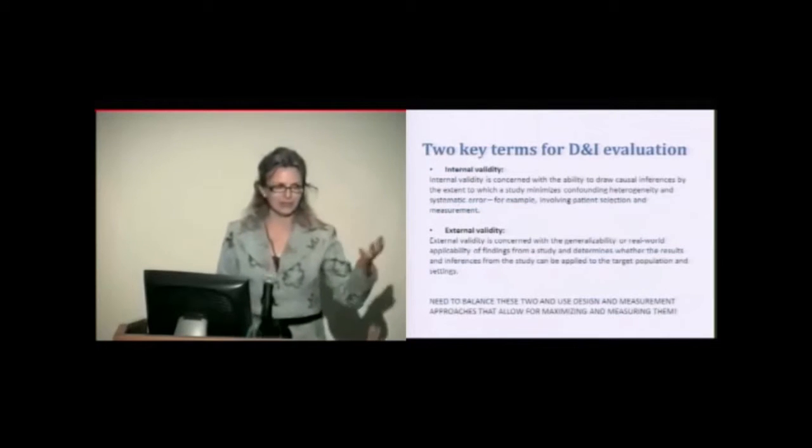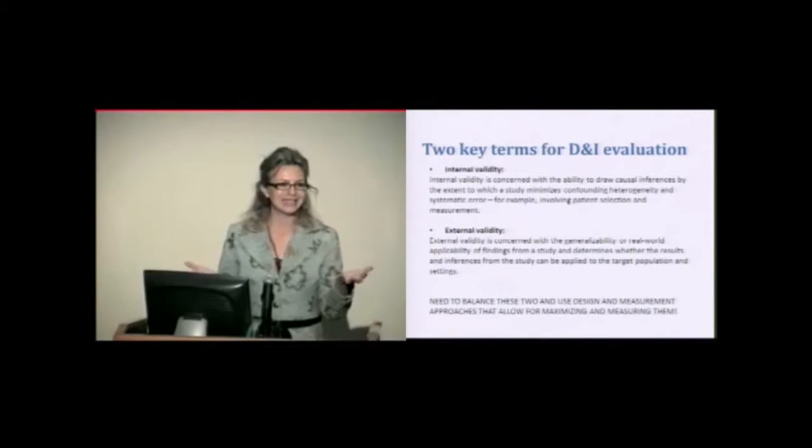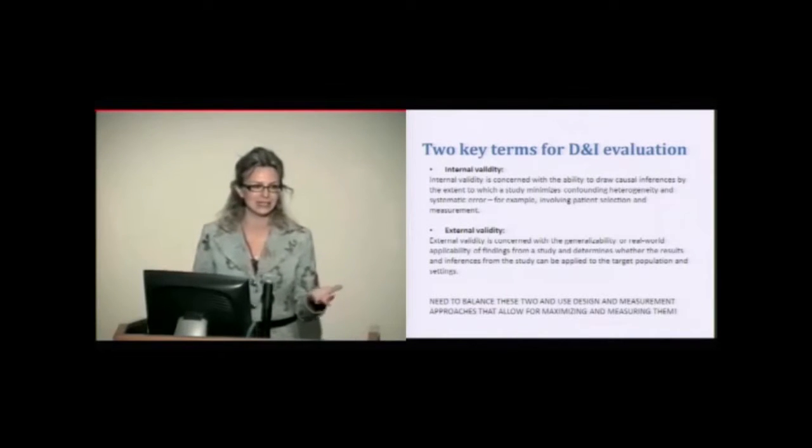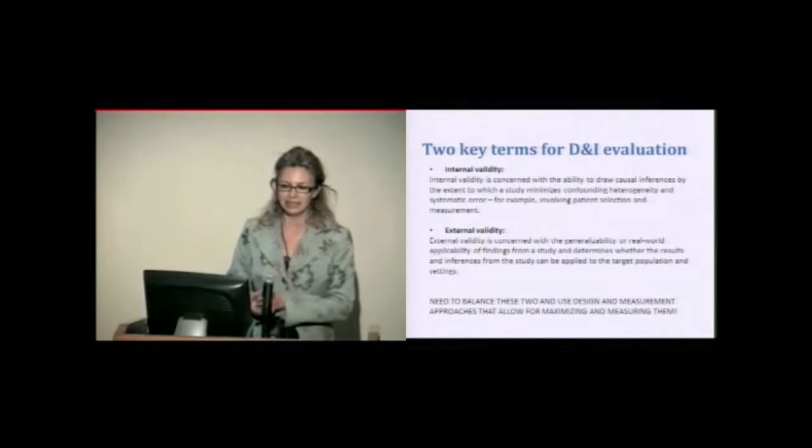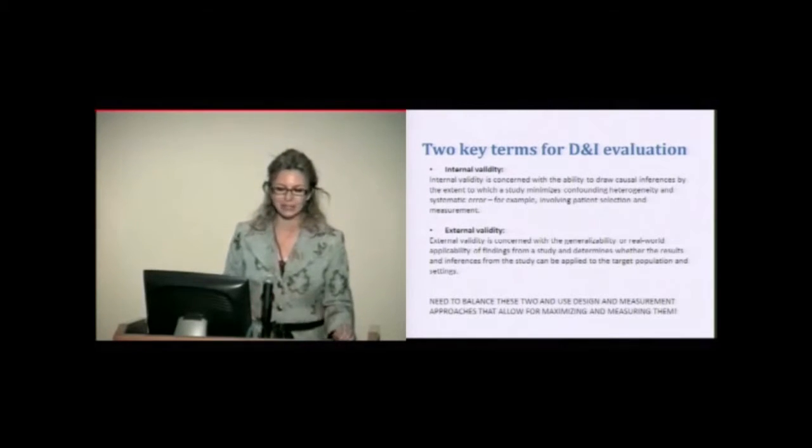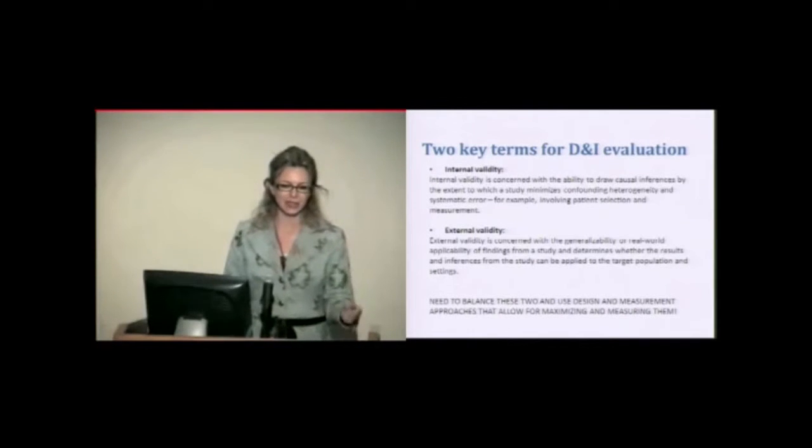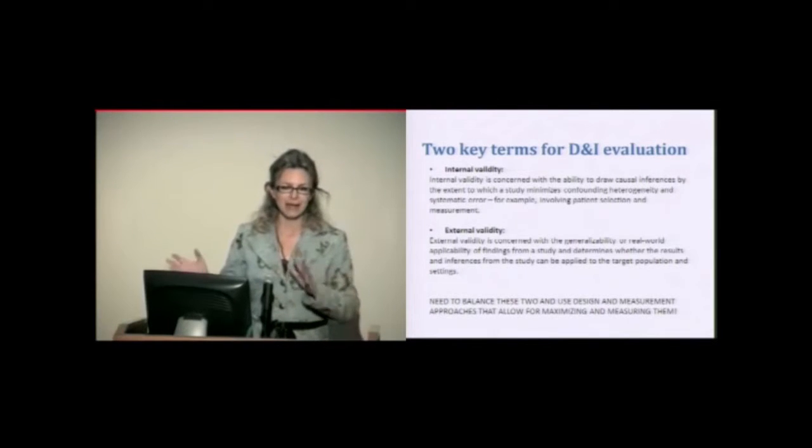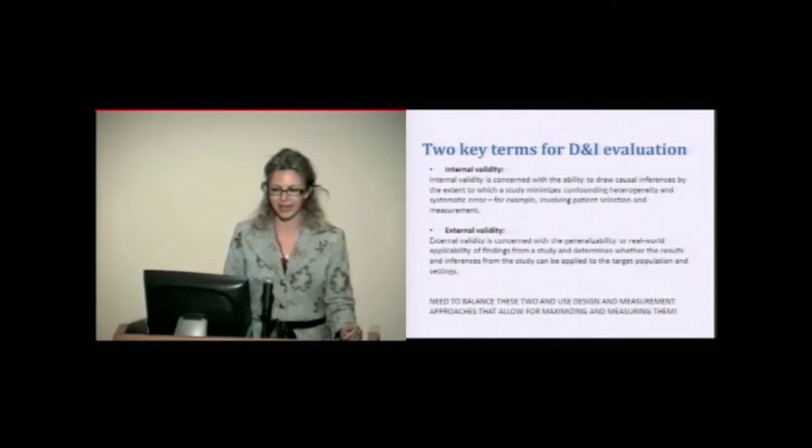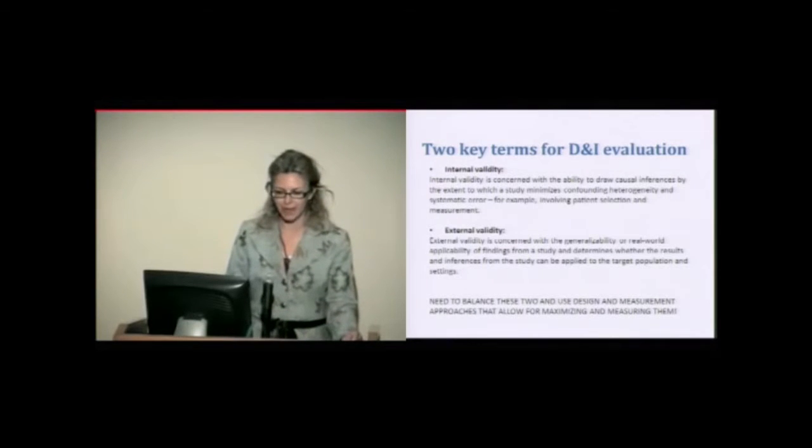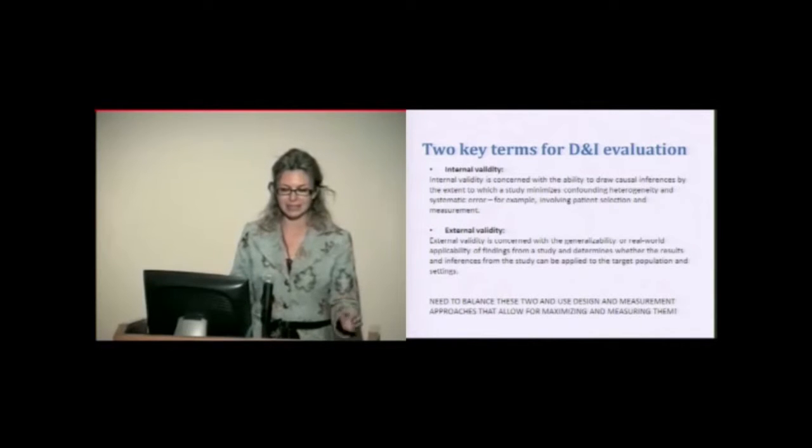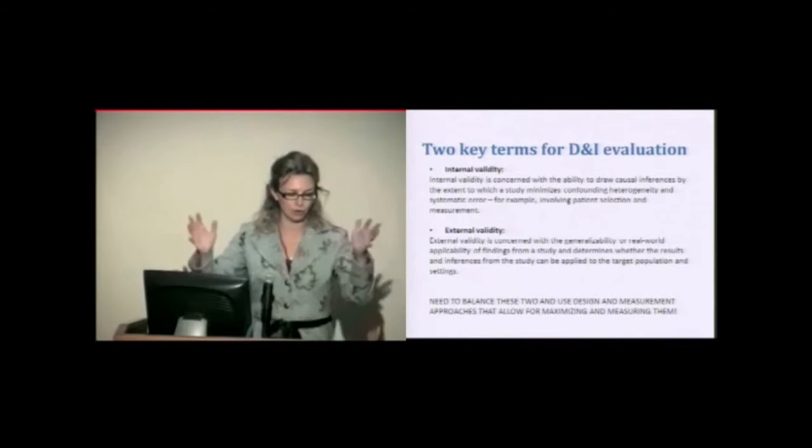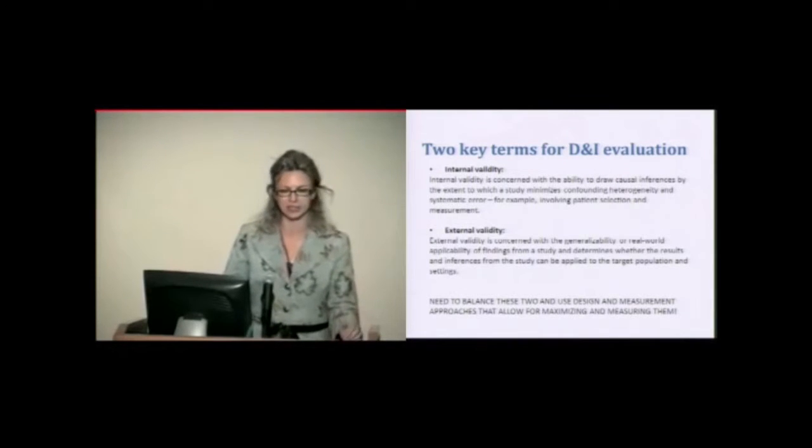Just to take a different spin on this and remind all of us of this existing tension between internal and external validity in study design. Internal validity being the ability to draw causal inference by the extent to which a study minimizes confounding. And then thinking of external validity, it's the generalizability or real world applicability of the findings. So clearly, the design that we choose will be most likely maximizing one to the damage of the other. But there are ways to find balance between the two, and measurement approaches that are able to maximize this balance. And also just measuring all the confounding that we call confounding in traditional studies and here more contextual factors will be essential.